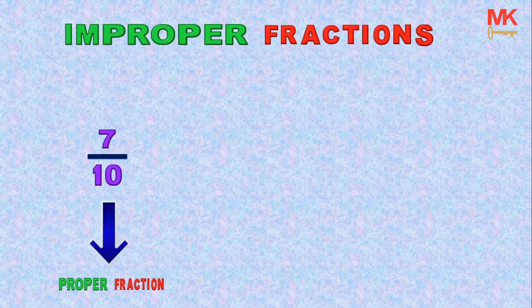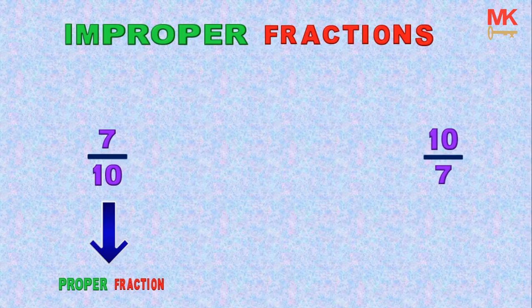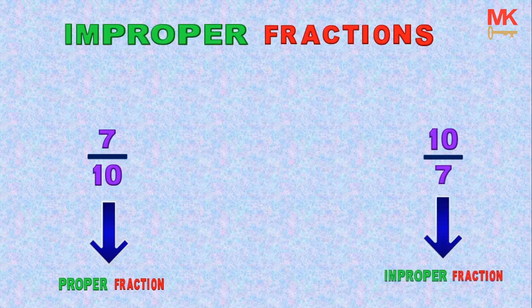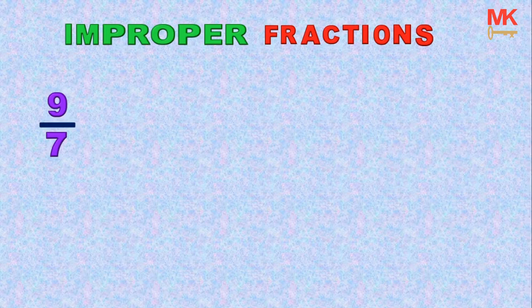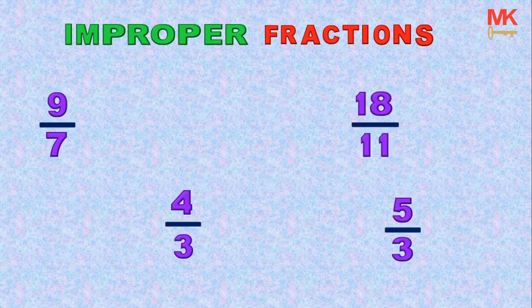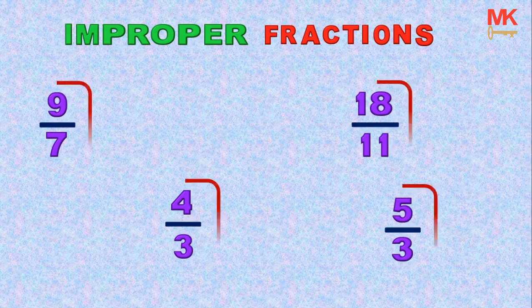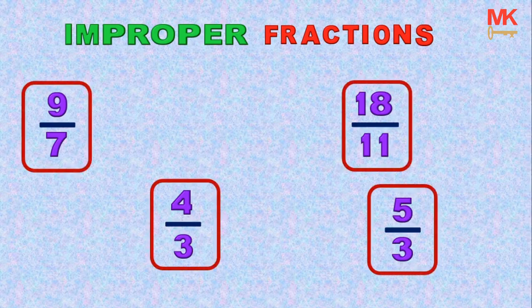All we have to do here is to first of all bring in our line of division and then swap the position. So the fraction 10 out of 7 becomes an improper fraction because the numerator is now greater than the denominator. Other examples of improper fractions are 9 over 7, 5 over 3, 4 over 3, 18 over 11. So these are all examples of improper fractions.